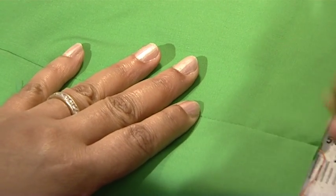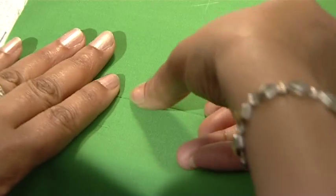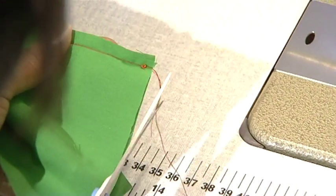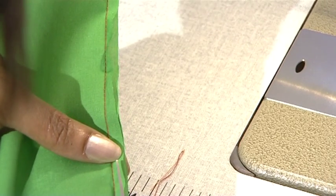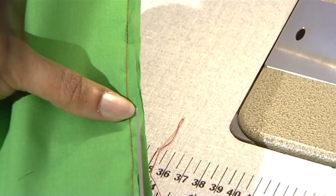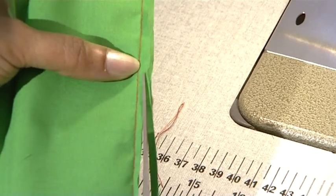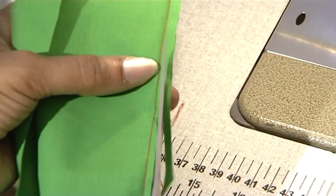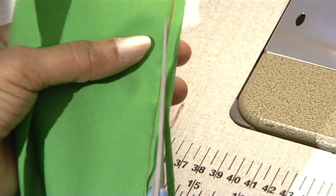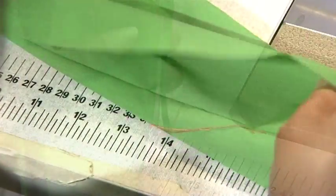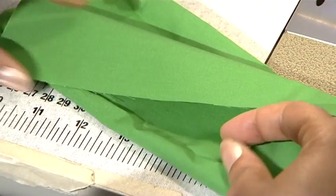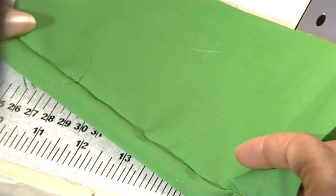We will trim two millimeters away from that six millimeter seam allowance. This will ensure nothing will come through onto the other side of the fabric. Turn the fabric over so that right sides of the fabrics are now together.